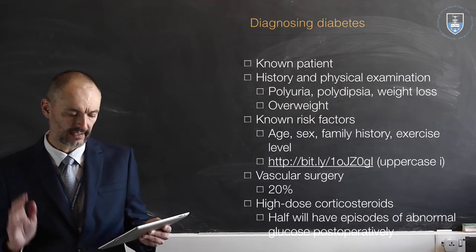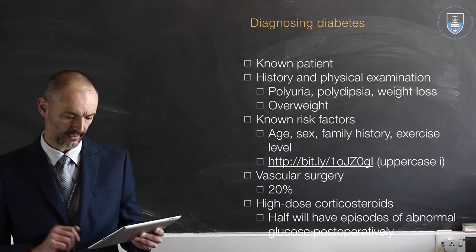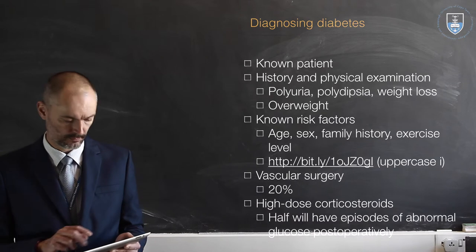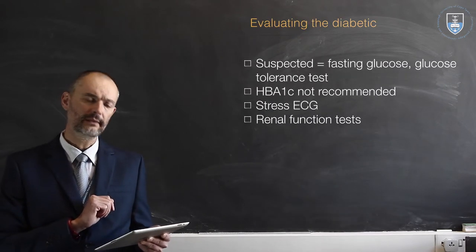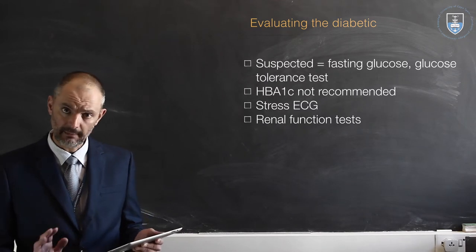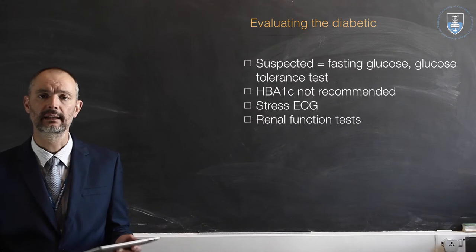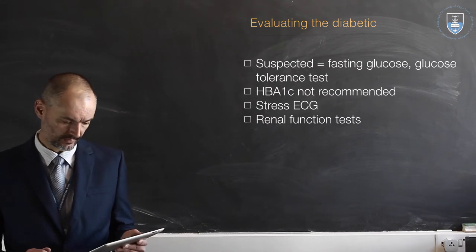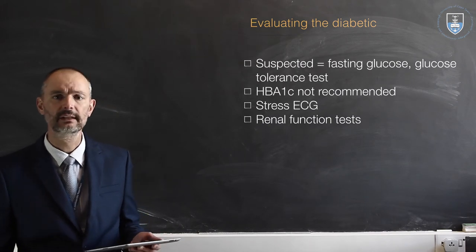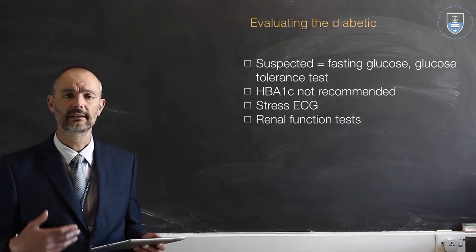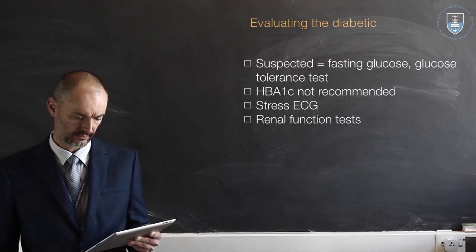Watch out for patients on high-dose corticosteroids — up to 50% of them will have post-operative bouts of abnormal glucose levels. Once these patients are suspected of being diabetic, you can send them for fasting glucose levels. If there's an abnormality, they can have a proper glucose tolerance test. It is not recommended to send diabetics for HbA1c levels, as they give some estimate of control but won't really alter your surgical management.